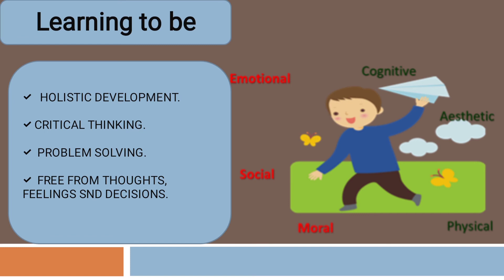The main thing is to take a development approach — to provide education for the child's holistic development. What will happen in holistic development? Mental development, social development, physical development, and emotional development. We have to focus on each of these.